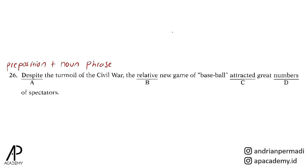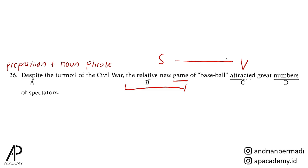Pilihan C, attracted. Attracted berasal dari kata dasar attract, yang merupakan verb. Attracted adalah simple verb atau kata kerja bentuk kedua. Kalau kita lihat subjeknya, subjeknya adalah noun phrase dari the relatively new game. Game sebagai head noun merupakan singular subjek. Untuk penggunaan past simple verb, subjeknya bisa dalam jumlah singular atau plural. Oleh karena itu, attracted masih benar.